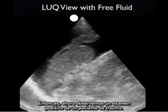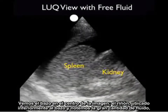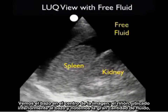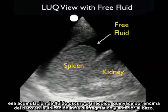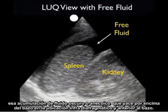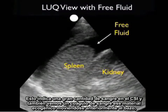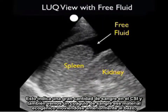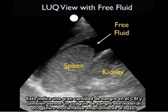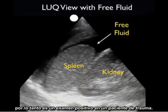Now let's look at a positive exam from a trauma patient. We see the spleen in the middle of the image and the kidney inferior to the spleen. Notice the large amount of fresh fluid — that dark or anechoic fluid collection — layering out above the spleen in the infradiaphragmatic location and anterior to the spleen. This indicates a large amount of fresh blood in the left upper quadrant. We also see a blood clot, that echogenic material, waving around anteriorly to the spleen — a positive exam in a trauma patient.